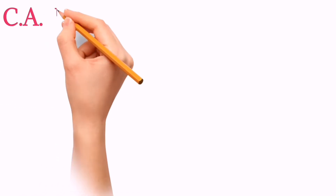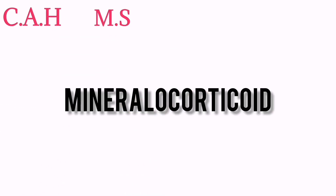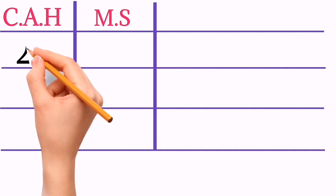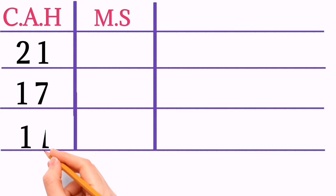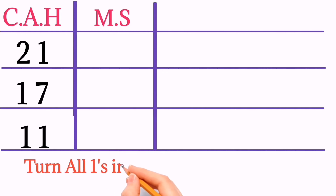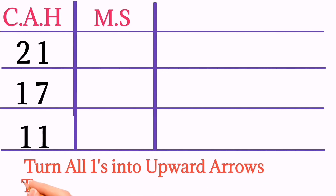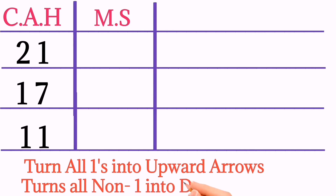The mnemonic for congenital adrenal hyperplasia is MS — M is for mineralocorticoid and S is for sex hormones. In the enzyme numbers (21, 17, 11-beta), the first digit represents mineralocorticoid and the second digit represents sex hormones. Turn all ones into upward arrows and all non-one digits into downward arrows.